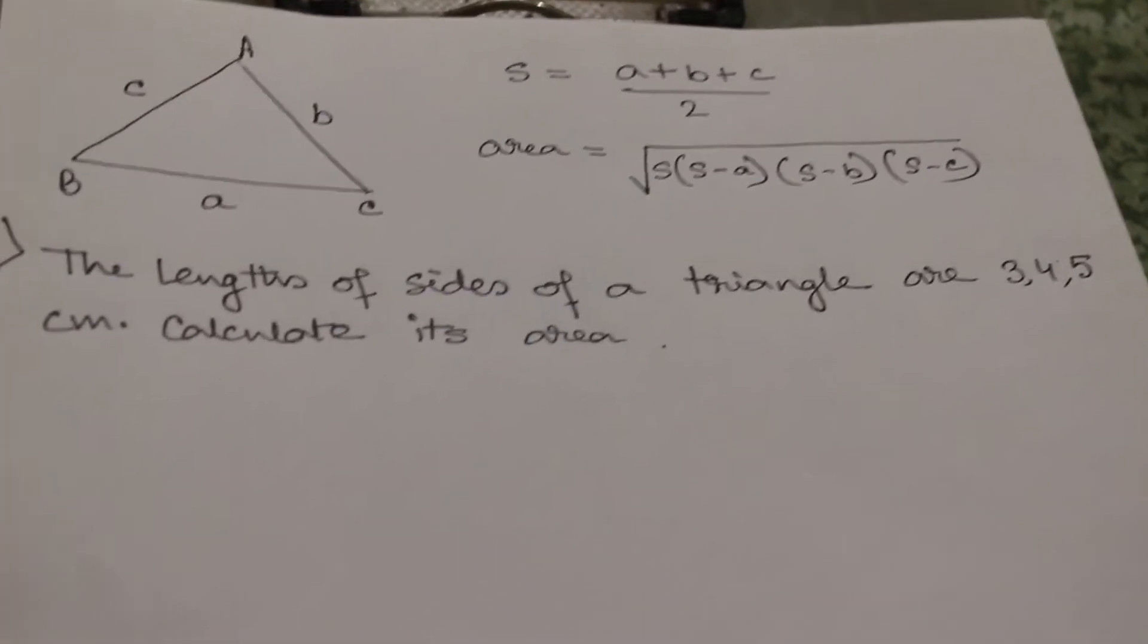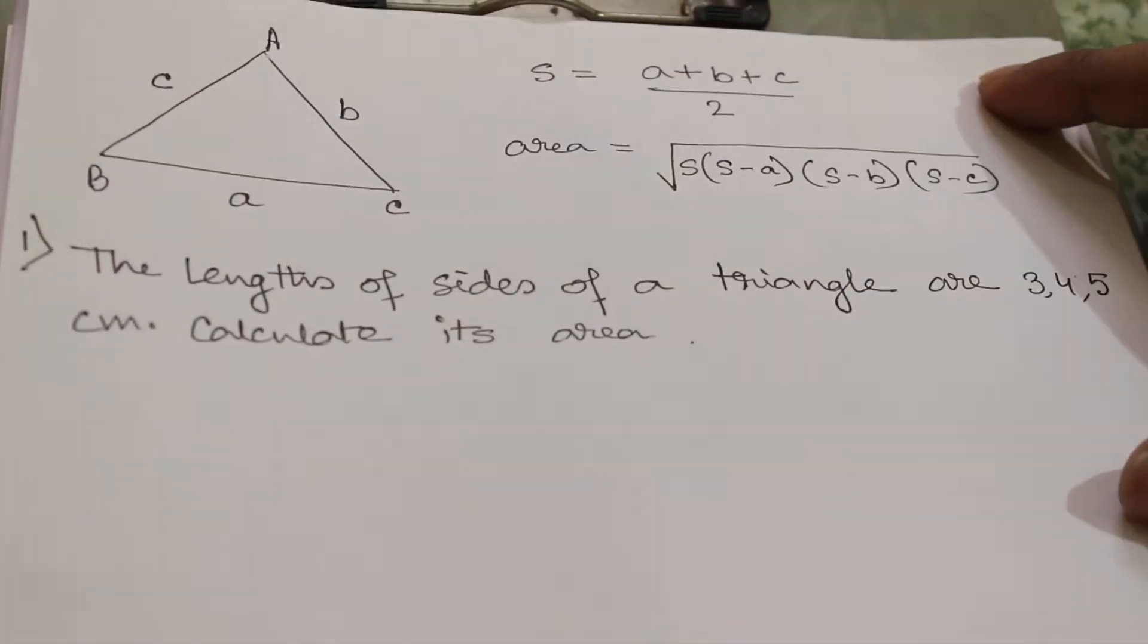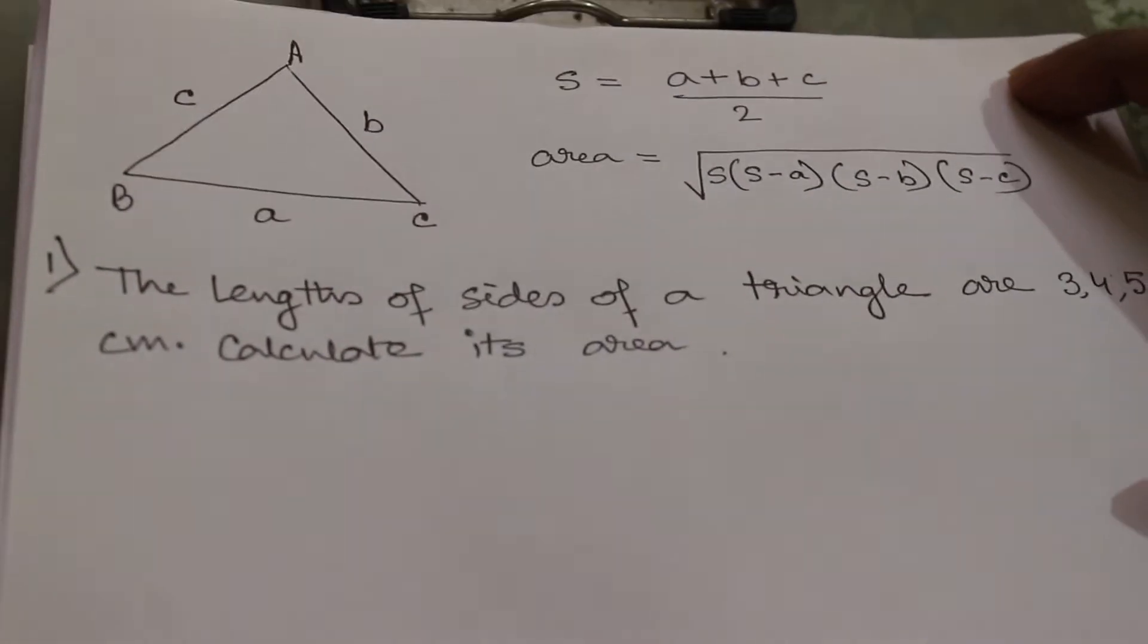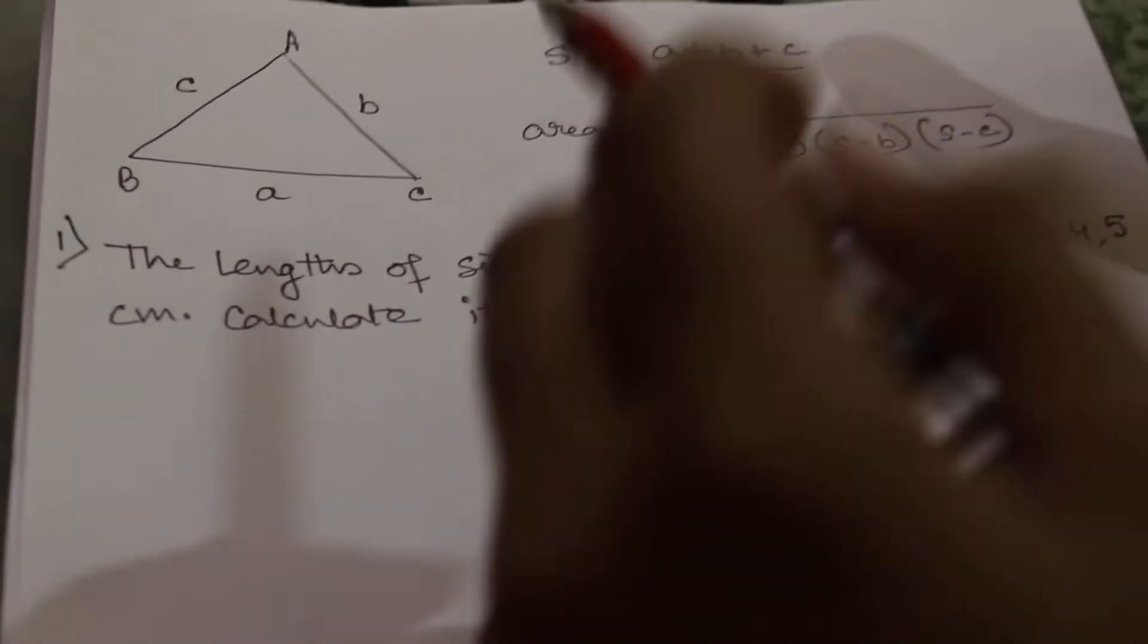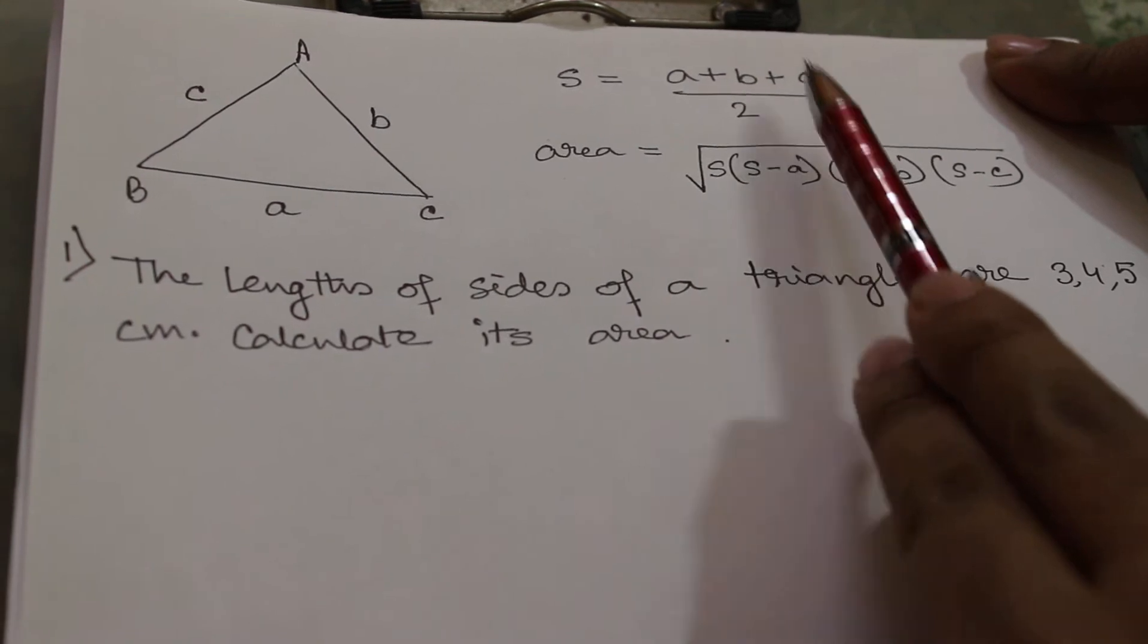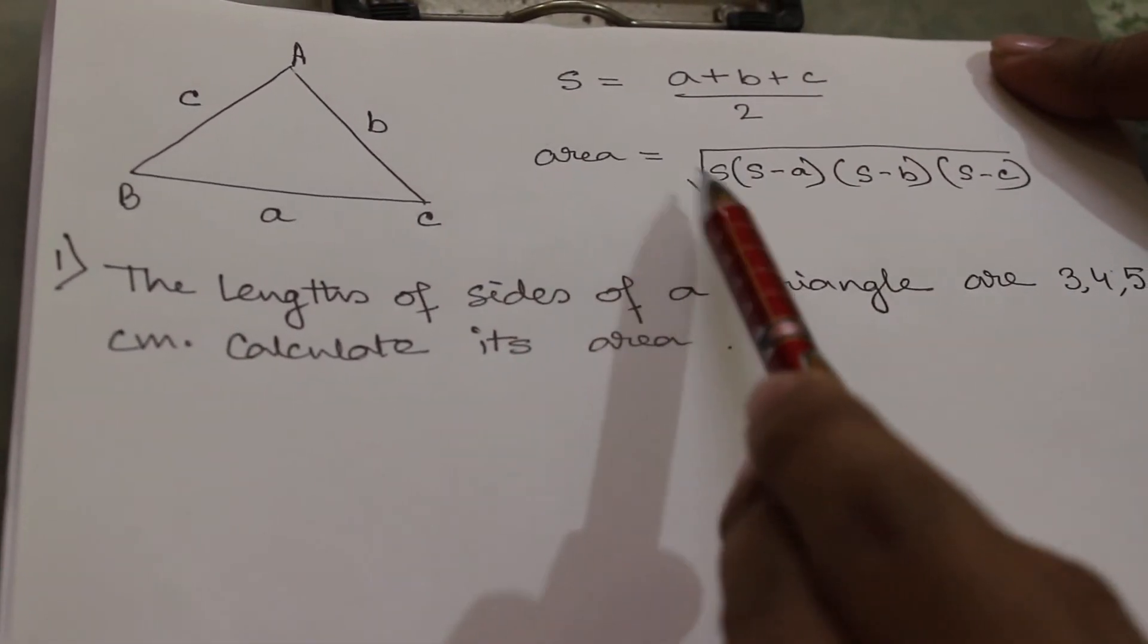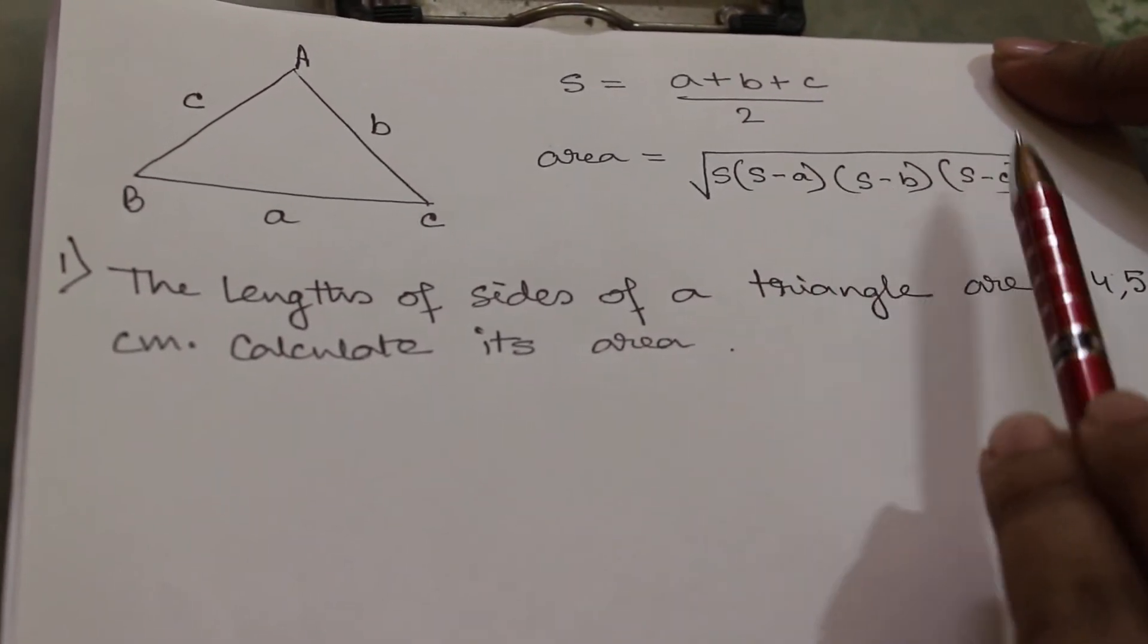This is a triangle ABC. The length of AB is c, length of BC is a, and length of AC is b. According to Heron's formula, we have to first calculate s, that is the half perimeter: (a + b + c)/2. Then the formula of area equals √[s(s-a)(s-b)(s-c)].